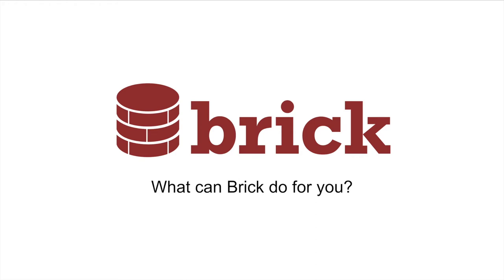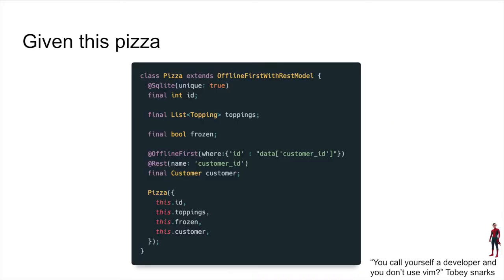It also includes our old friend Toby McGuire. So we're going to start — all the examples that follow will use this code as a model example. We have an ID field, a toppings field which is an enum, a frozen field which is a boolean, and a customer which is an association on the pizza model.